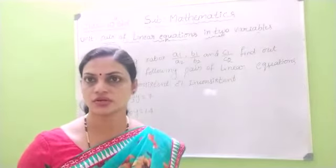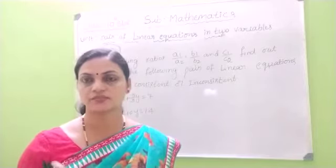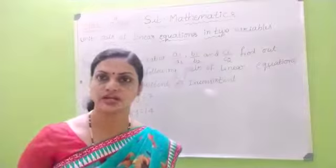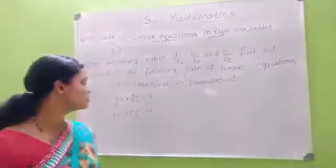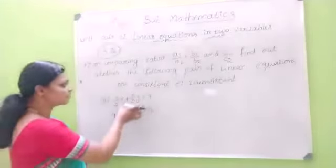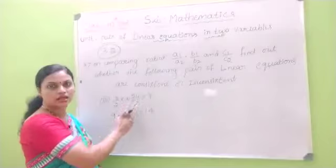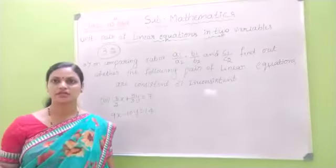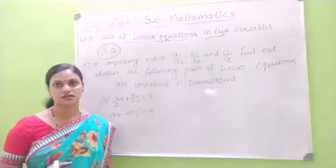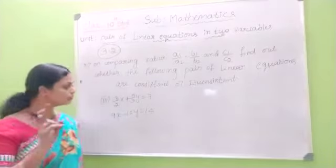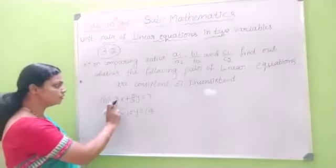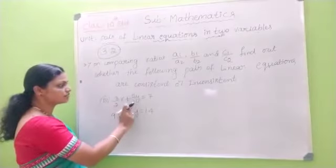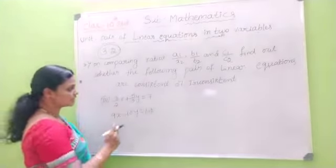First, the ratios are: A1, B1, C1, A2, B2, C2. The ratios are compared. The third problem is different from the first problem.